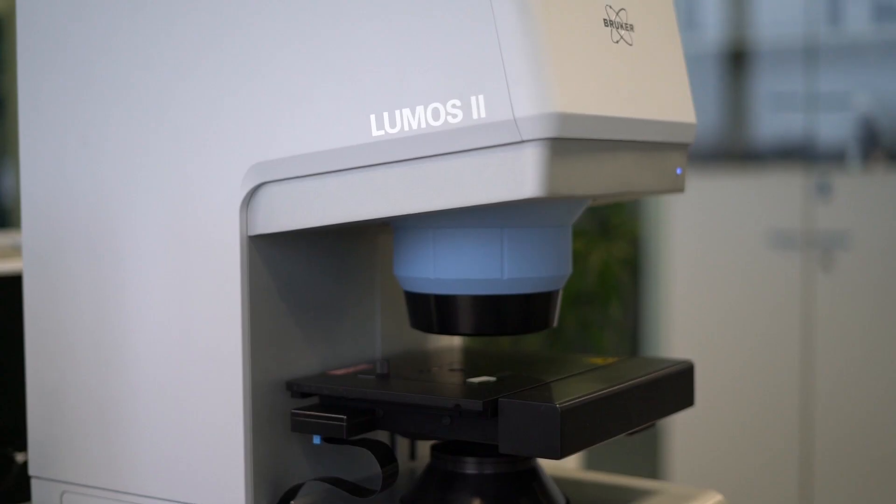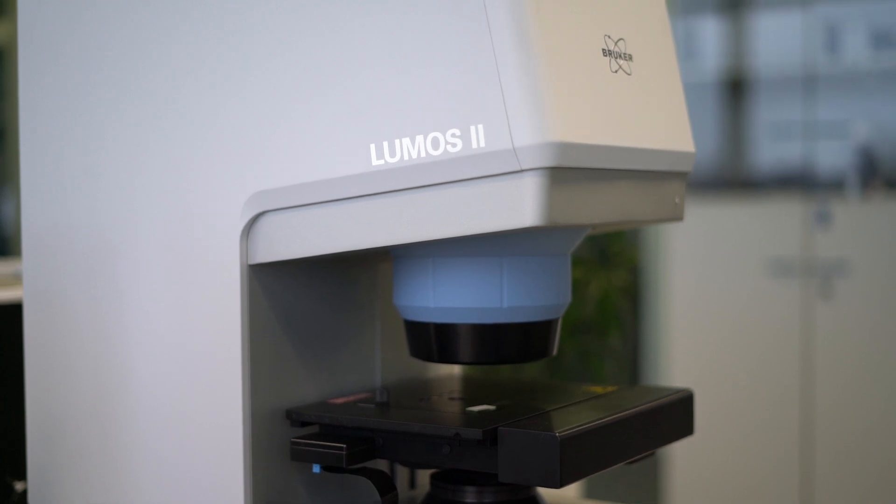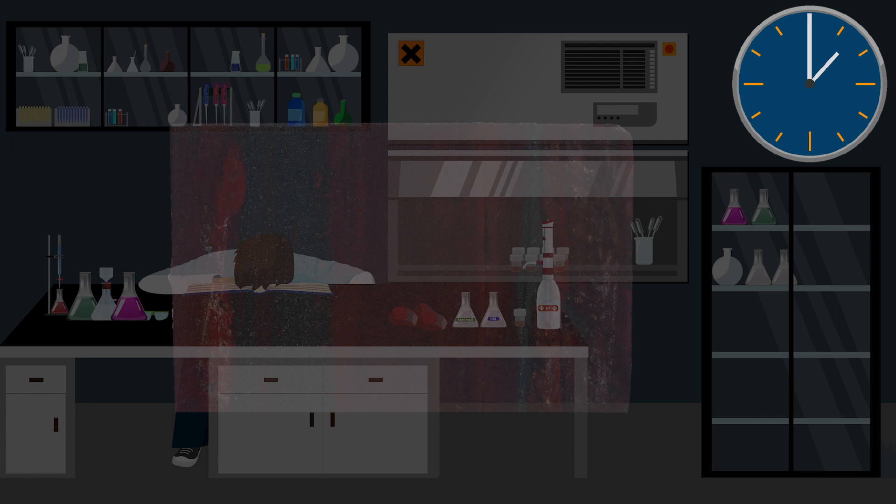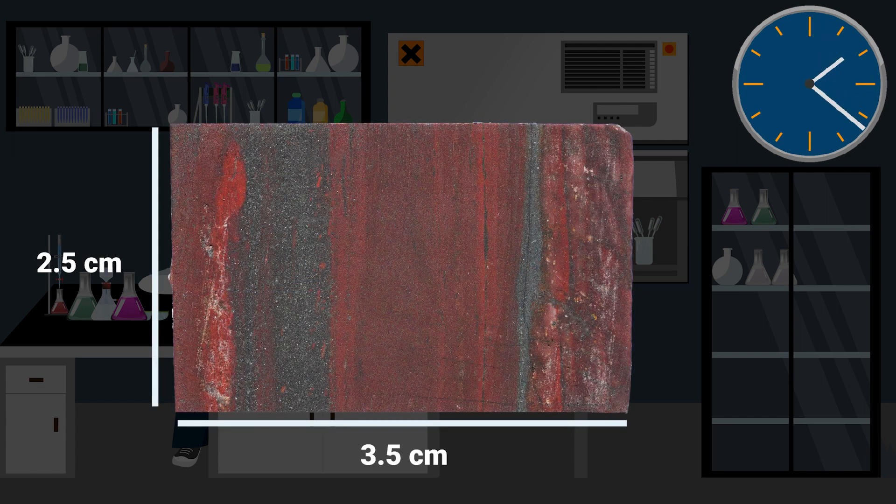This is where FTIR comes into play. There is no need for tedious sample preparation, as would be necessary in a wet chemical or SEM analysis. And even large sample areas can be scanned quickly, creating a detailed chemical image.